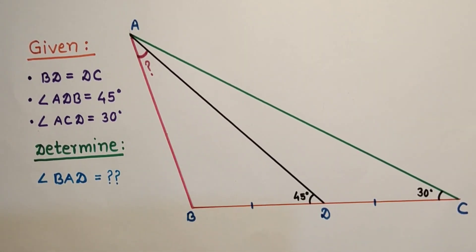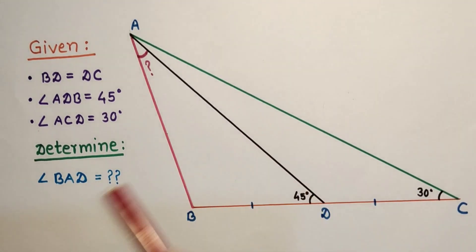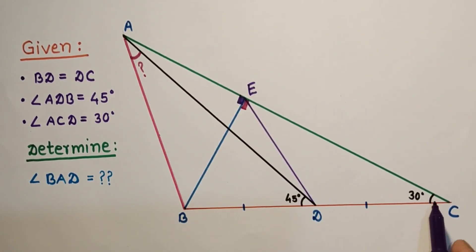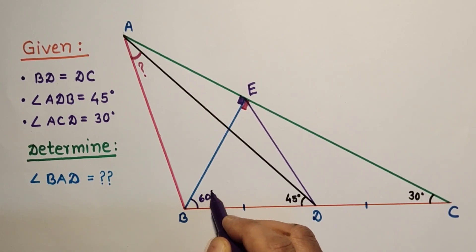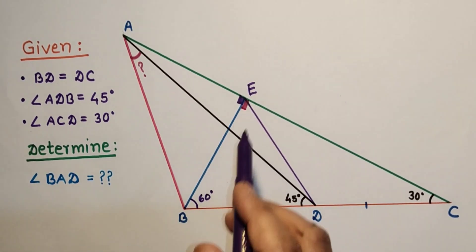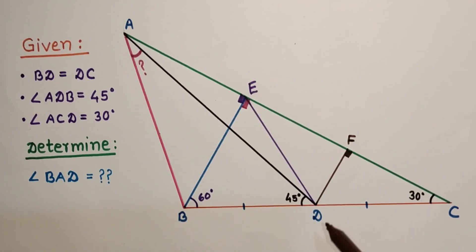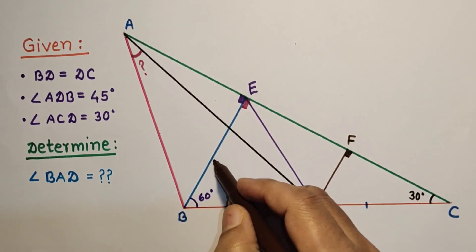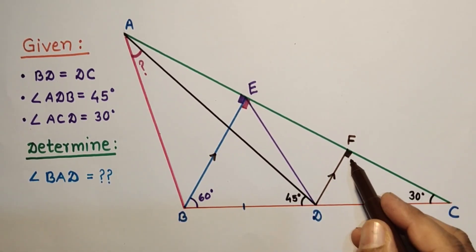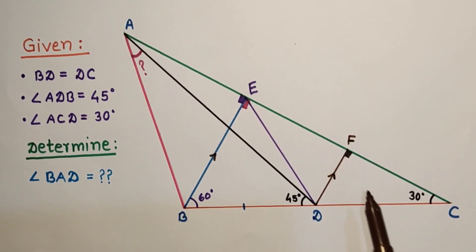Let us start Method 1. Construct a line perpendicular to AC from point B, meeting AC at point E. This gives a 90-degree angle. Since angle ACB is 30 degrees, angle ABE works out to 60 degrees, because 90 minus 30 equals 60. Now from point D, draw a line DF parallel to BE, so this angle at F is also 90 degrees.